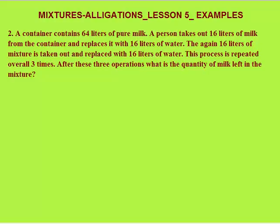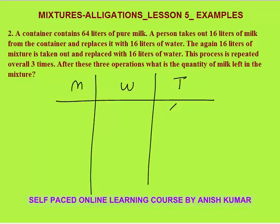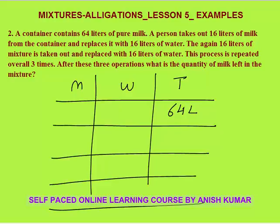The second question: a container contains 64 liters of pure milk. A person takes out 16 liters of milk and replaces it with 16 liters of water. This process is repeated overall three times. After these three operations, what quantity of milk is left? Initially, milk is 64 liters and water is 0 liters.